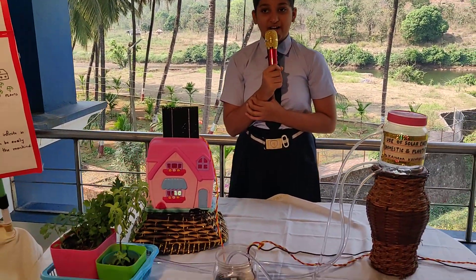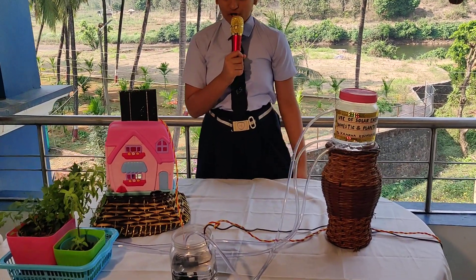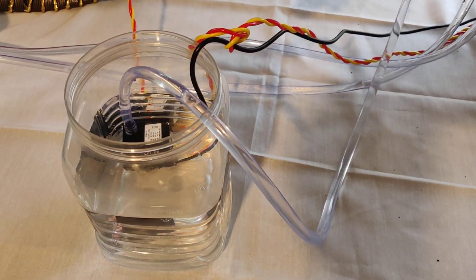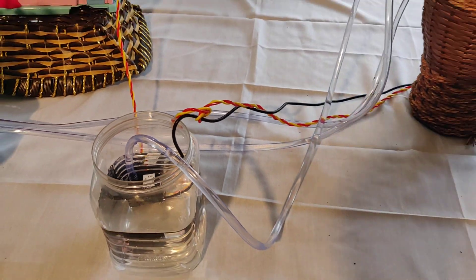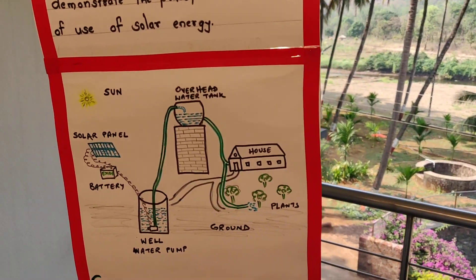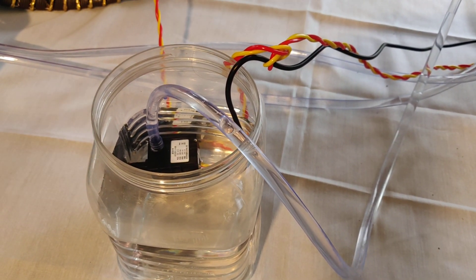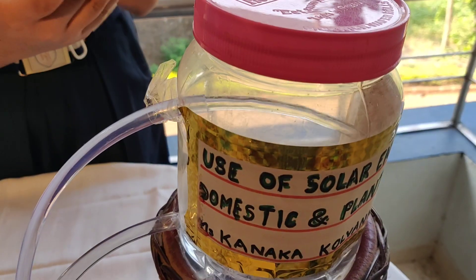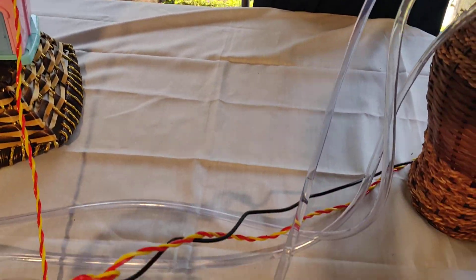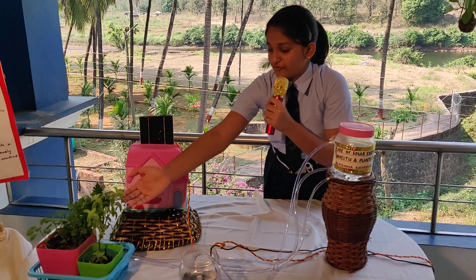I will now operate this model and demonstrate the use of solar energy for domestic purpose and plantation. Here I have used plastic transparent jars — it is suggested to use biodegradable material. I have used a water pump so that the water is pumped up to the overhead water tank. By gravitational force, the water then goes down and is used for domestic purpose and for plantation.